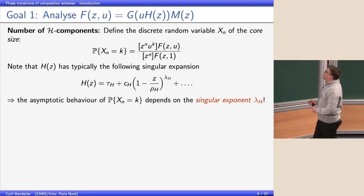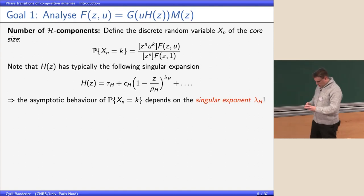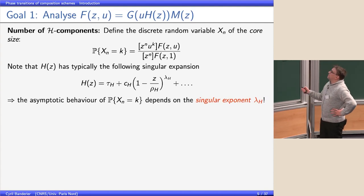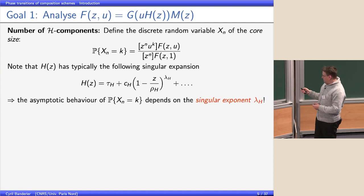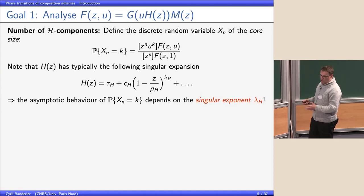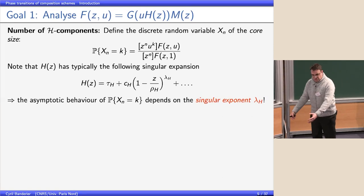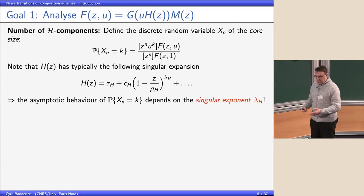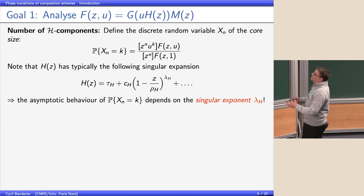More precisely, we want to follow the number of basic building blocks — the H-structures — in such a composition scheme. The variable z marks the size, the number of atoms in your structure. The exponent of variable u says: I have k structures of type H. If you give me a random structure of size n, what is the probability that it has k blocks of type H? This is sometimes called the size of the core.